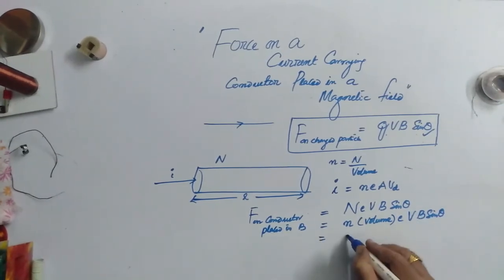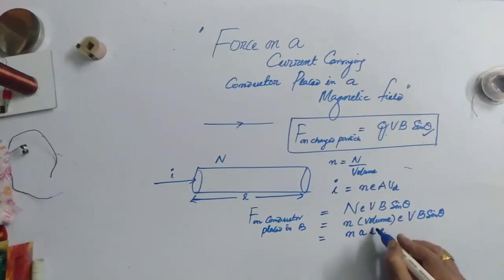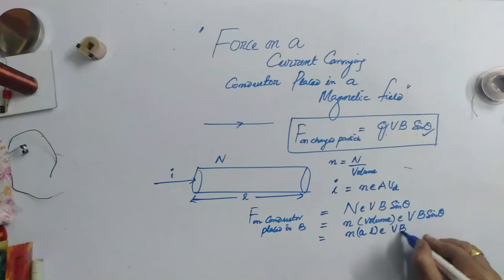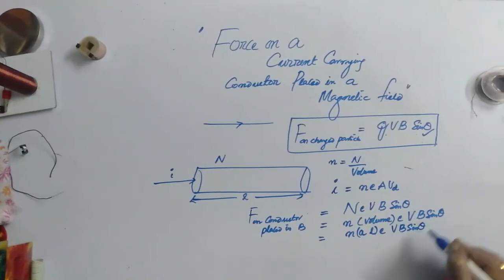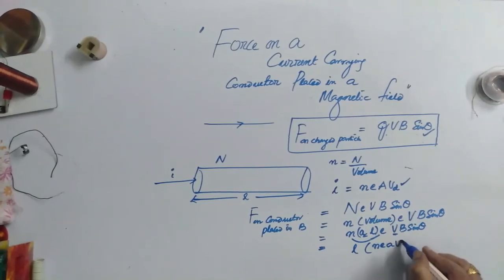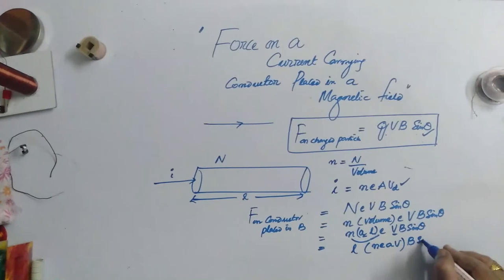Now this is N, A times L, because the volume is nothing but area times length. V, B, sin theta. Now this N, E, A, V, that is nothing but I. So take this L outside: L times N, E, A, V, and then B, sin theta.